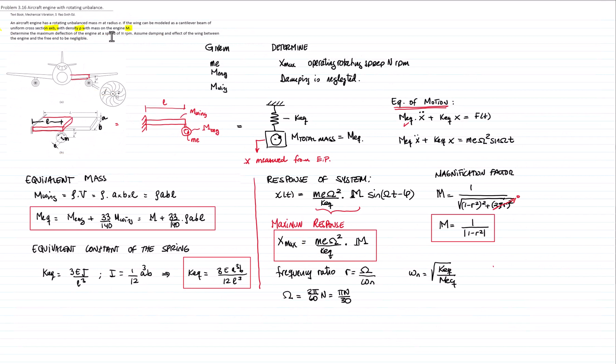Since we don't have any numbers, we cannot move any farther, but this is the maximum response, where the equivalent constant of the spring is this term over here, and the magnification factor is calculated as 1 over 1 minus r squared. r is the frequency ratio, we have the operating speed, we have the natural frequency if we divide these two quantities. And this is the solution of this problem.